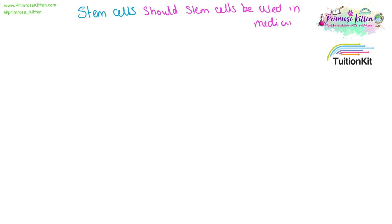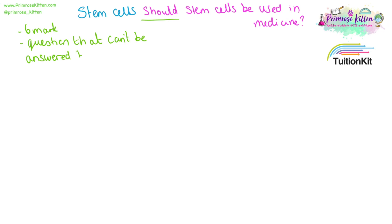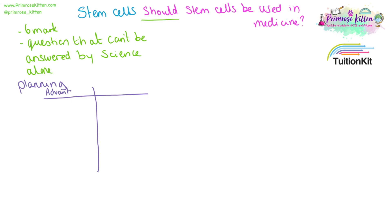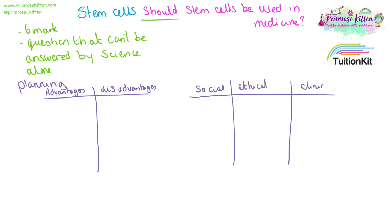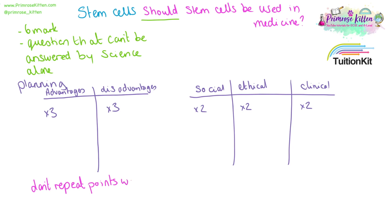"Should stem cells be used in medicine?" is an example long-answer or six-mark question that you might get in your GCSE exam. Whenever you see a "should," it is a question that can't be answered by science alone — there are lots of other things we need to take into account. It is always worth taking one minute of your time to plan your answer. If the question is an advantage/disadvantage question, then just draw a little table. You might also get a question which says compare or discuss the social, ethical, and clinical uses of stem cells in medicine. Just make sure you can jot down enough points so that you have a balanced answer. Don't just give six advantages or six disadvantages and ignore the other parts of the question — you won't get the full marks.